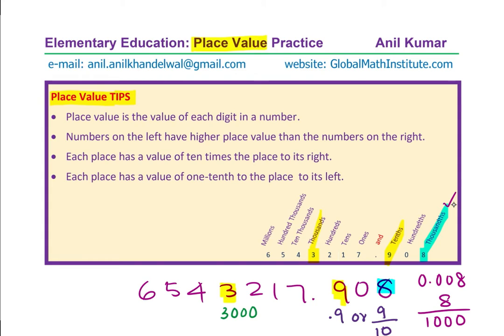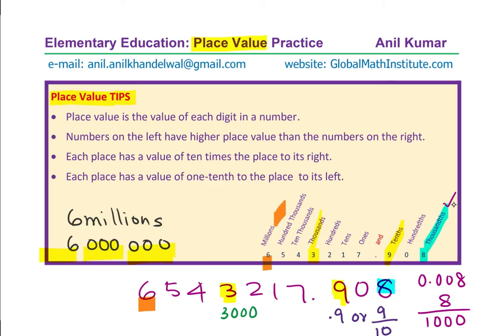The number 6, which has the highest place value, is in the millions place. In millions we have 6 zeros, and therefore we write this as 6 million, or 6 thousand thousand. Note that whenever we write a number we use periods of 3. The first 3 places are for hundreds, the next for thousands, and then millions — and so on. So we have periods of 3 on the left side of the decimal.